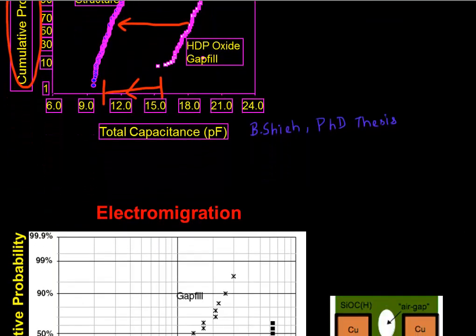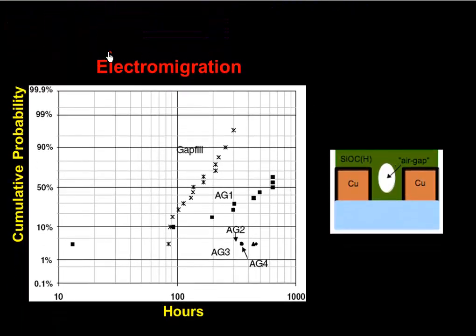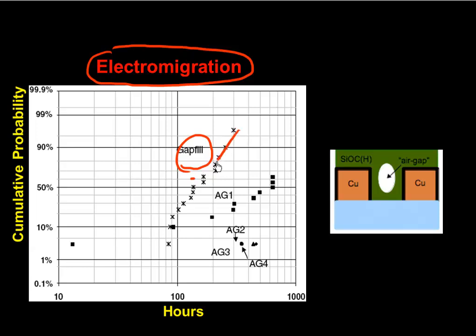And another benefit that you get again for free is that your electromigration, which is becoming an increasingly major concern in your interconnect. So your electromigration performance also improves with this air gap. So shown here is your electromigration without an air gap. And you can see that electromigration, which is measured as the number of hours your interconnects can sustain that stress, again increases if you have an air gap.